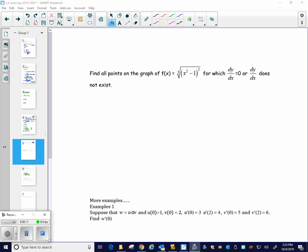So I'm going to try to make this a relatively quick video, and we'll see how this goes. So this page that we skipped, find all the points on the graph of f(x), which is that cubic cube root function there, for which dy/dx equals zero, or for which dy/dx does not exist.